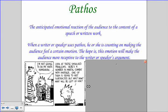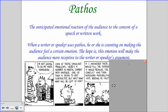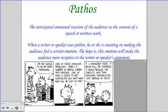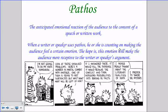Calvin says: 'Look at these unsolved problems. Here's a number in mortal combat with another. One of them is going to get subtracted. But why? How? What will be left of him? If I answered these, it would kill the suspense. It would resolve the conflict and turn intriguing possibilities into boring old facts.' Basically, he's trying to make you feel sorry for the number that's about to get subtracted. 'I never really thought about the literary qualities of math. I prefer to savor the mystery.' He closes his book — he's not doing his math homework. In an attempt to persuade Hobbes, he tries to make him feel sad for the numbers about to be decimated by the act of subtraction.